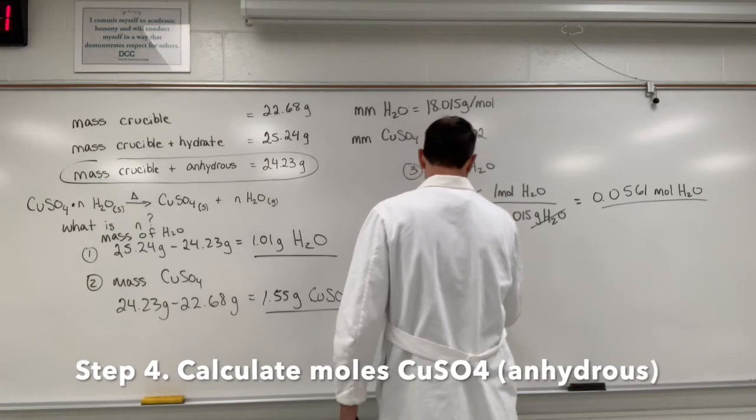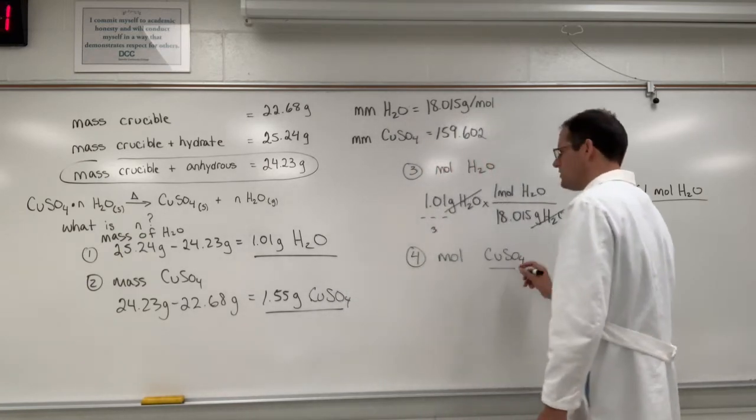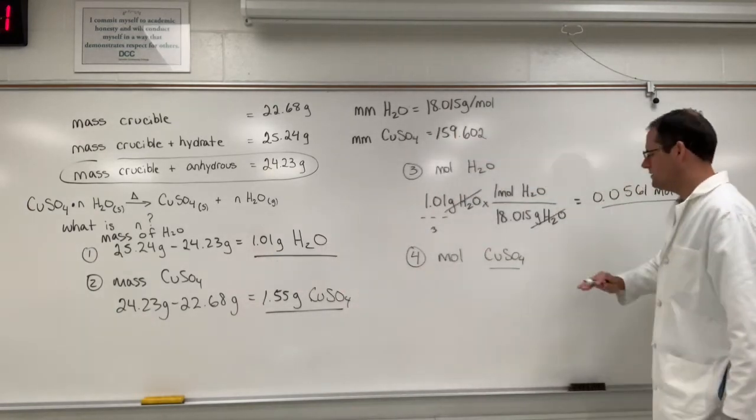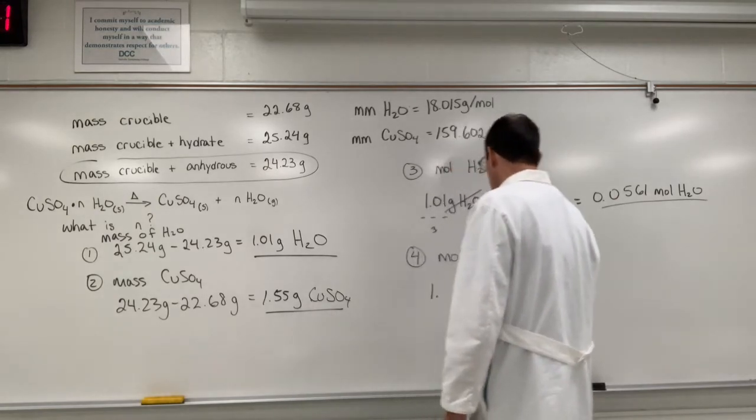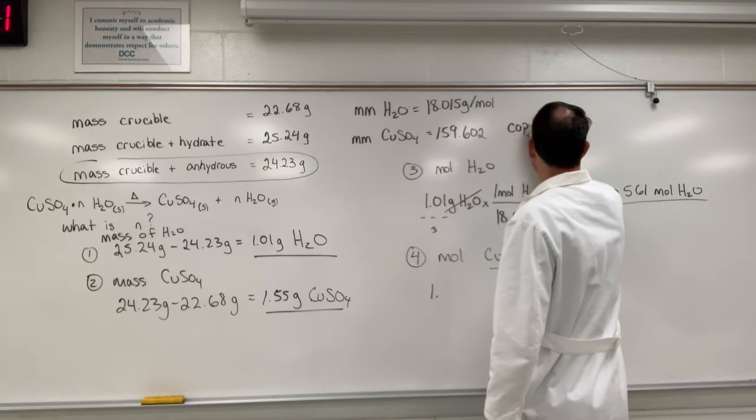Now, we want to do the same thing for moles of copper sulfate. So this is the dry stuff. So this is the mass of the dry copper sulfate. This is the mass, the moles of the dry copper sulfate. This is copper two sulfate in case you're wondering about the name.